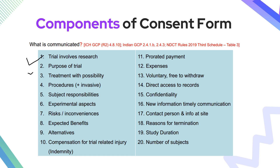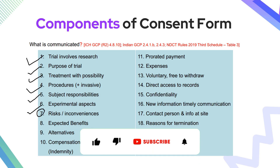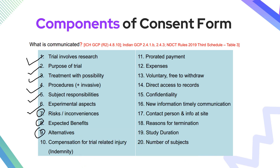The second thing is the informed consent form will mention the purpose of the trial — why we are conducting it and what the therapeutic indication is. Next, the form will mention that there is a possible treatment — not a sure-shot treatment but a possibility. It will also mention what procedures are involved, including any invasive procedures, and there will be a section on the subject's responsibilities, the experimental aspects, and the risks and inconveniences expected. It will also state the benefits of participating and what alternative therapies are available.